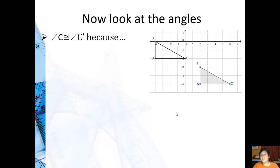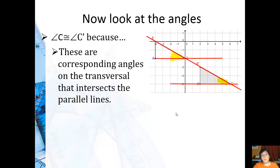Looking at angle C, I can do the same thing. Draw the transversal, and then show the parallel horizontal lines. Highlighting the angles there, those are also corresponding angles on the transversal. So, they are also congruent.